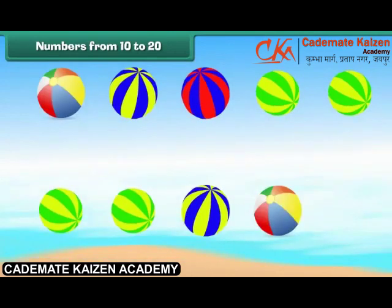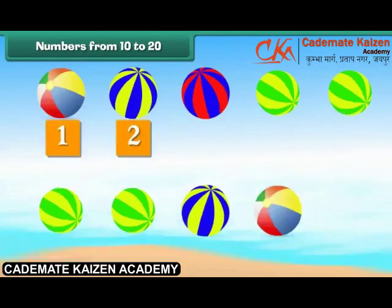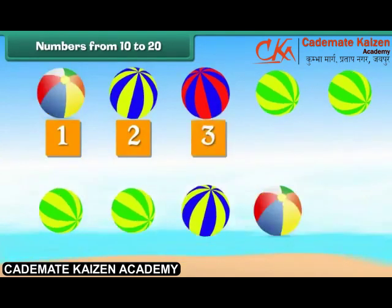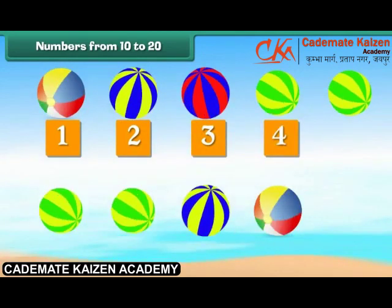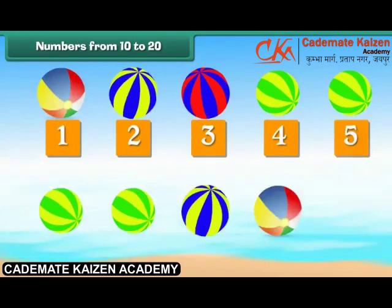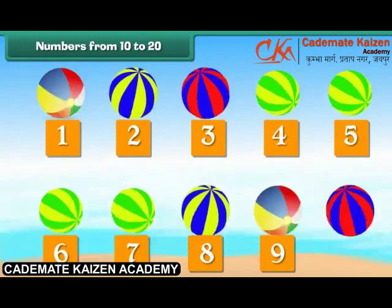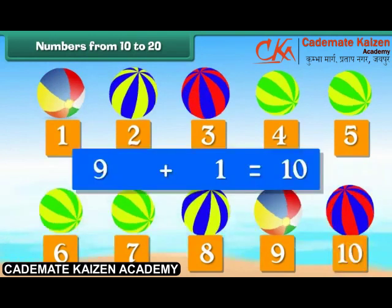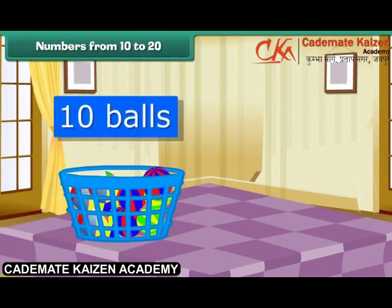Numbers from 10 to 20. Look at these colourful balls. Let us count them: 1, 2, 3, 4, 5, 6, 7, 8, 9. Let us add one more — we have 10 balls. 9 plus 1 is 10. Let us put these balls in a bucket. We now have a group of 10 balls.